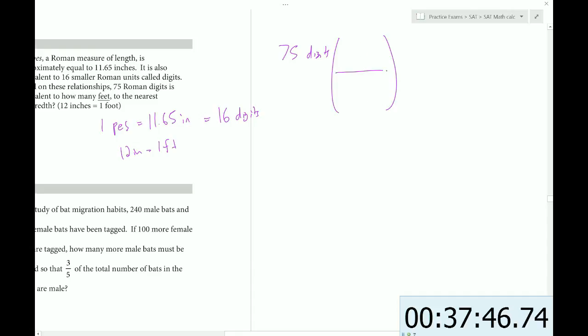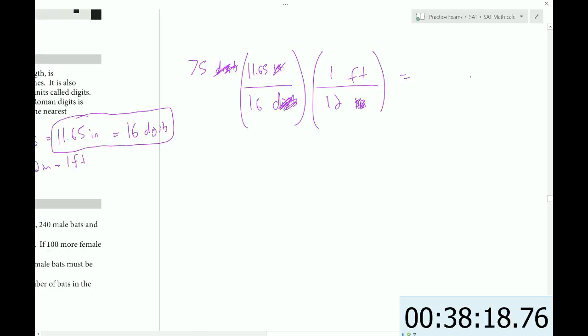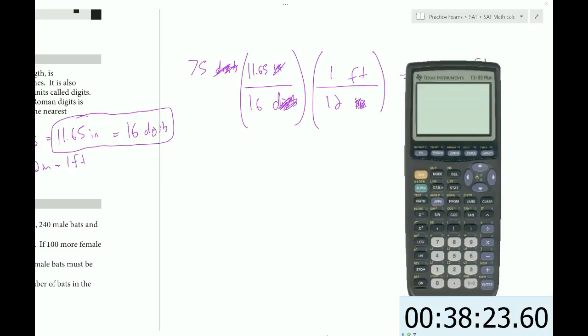Let's see how to get there. Starting with 75 digits, we'd like to get out of digits, so we have to use something that involves digits. We know that 16 digits corresponds with 11.65 inches. The digits would cancel, leaving us in inches. But we want to go further than that. We want to get out of inches, so we put inches on the bottom and we can put feet here. 12 inches is 1 foot. So we would get the inches to cancel out. So if we do the math correctly, we should now be in feet. And therefore, once we get the right unit, we should certainly have the right answer.